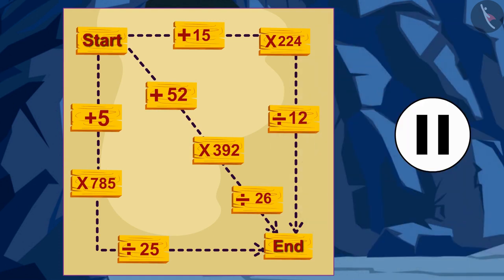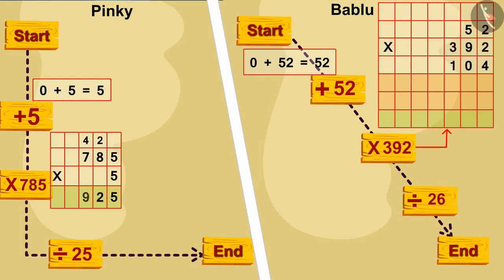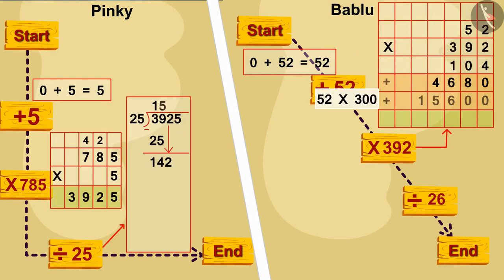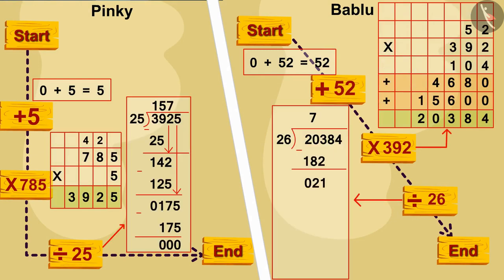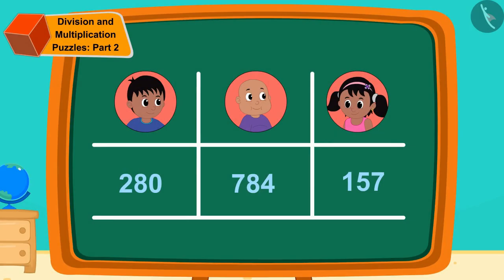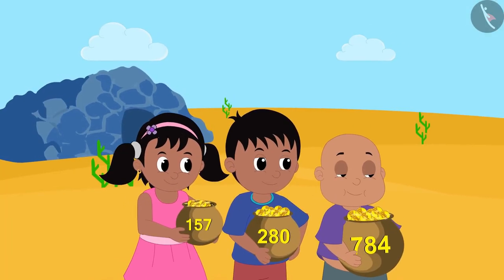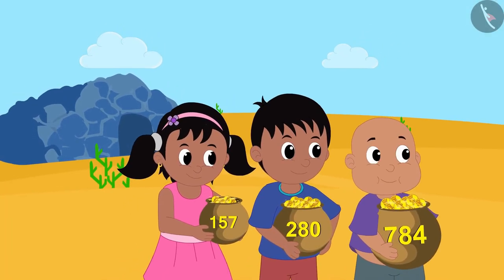Well done children, you have solved it absolutely correctly. Babloo got the most, he got 784 gold coins. The three friends happily returned home with their treasures.